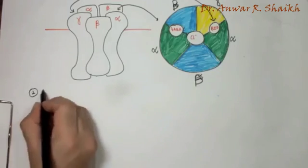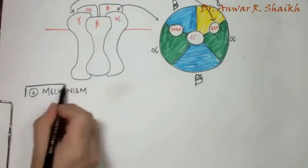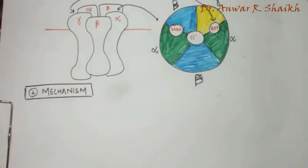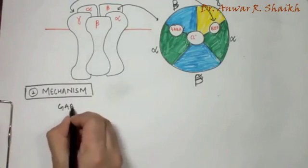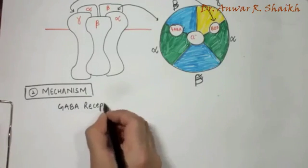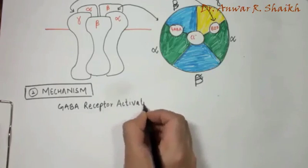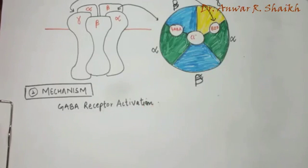The next part to be discussed here is the mechanism of action of this GABA receptor. The basic step involved in the activation of the GABA receptor is binding of the ligand or the drug to the GABA site or the benzodiazepine site.